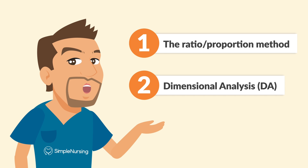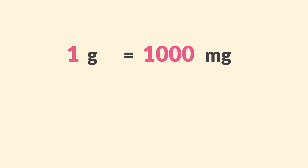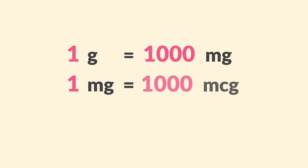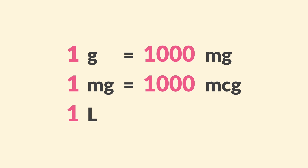Each method requires that you know basic metric conversions. For example, you already know that one gram equals 1,000 milligrams, or one milligram equals 1,000 micrograms, or a liter — for example — that's 1,000 milliliters.